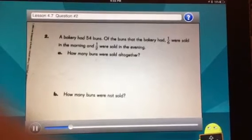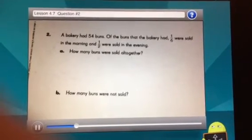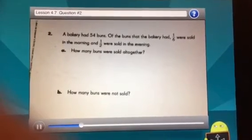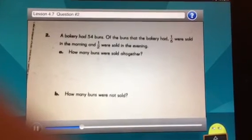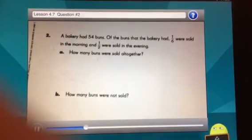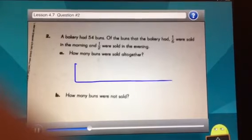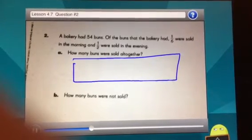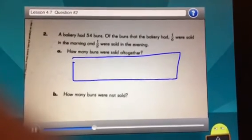So the first thing that you need to do is find a common denominator with one-half and one-sixth. After you do that, we can draw our bar and figure out how many pieces we need to break it into.